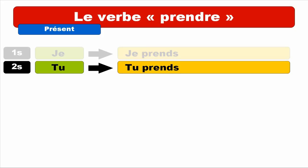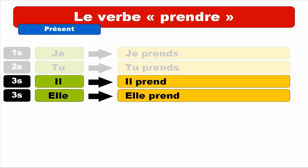IL and ELLE — masculine IL. We get IL PREND. Same pronunciation — final D is not pronounced, so it's only P-R-E-N — PREND. Repeat. IL PREND. And then ELLE PREND. Repeat. ELLE PREND. So JE, TU, IL and ELLE are pronounced the same way — JE PREND, TU PREND, IL PREND, ELLE PREND. But remember to put the final S for JE and TU.